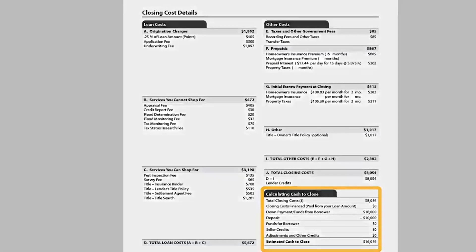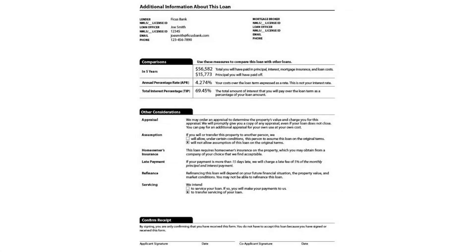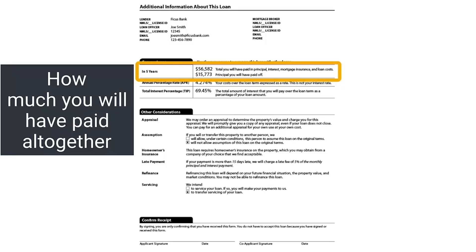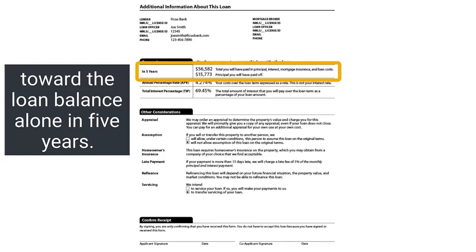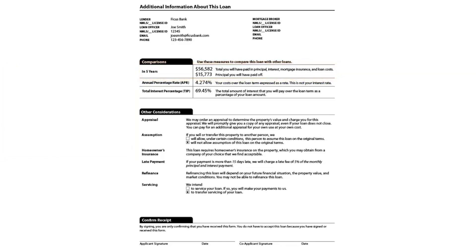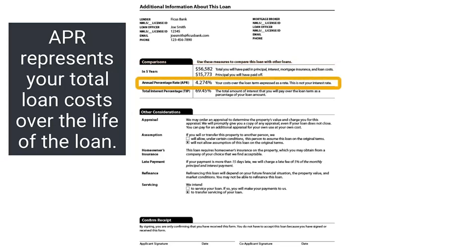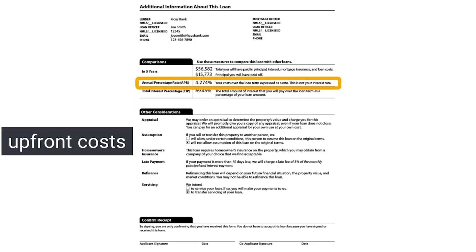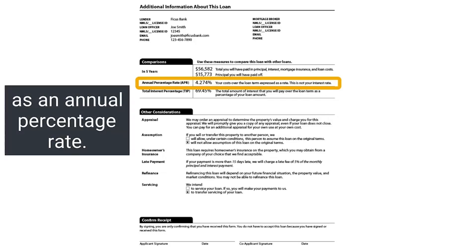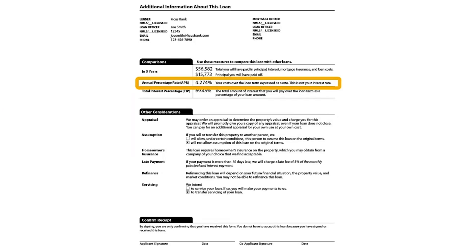Page 3 of the loan estimate has a few more key numbers. The "in five years" section shows how much you will have paid altogether and how much you will have paid off toward the loan balance alone in five years. The APR represents your total loan costs over the life of the loan, including interest and upfront costs expressed as an annual percentage rate.